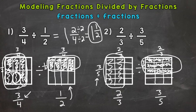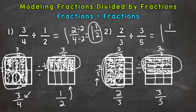Let's see how many whole groups of three-fifths we can pull out of the first square representing two-thirds. We count one through nine — that's one whole group of three-fifths. We have one piece left over, and we need nine pieces to make a whole, so that's one out of nine. One-ninth is already in simplest form, so the answer to number two is one and one-ninth. That's how you model fractions divided by fractions.